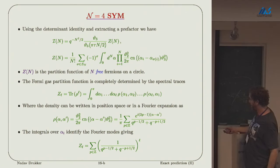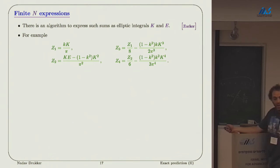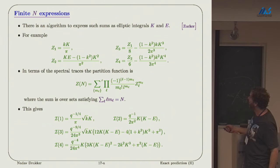These sums actually have been computed before. There's an algorithm to calculate them, and here I write the first four of them. They are given in terms of complete elliptic integrals K and E, and K is the elliptic modulus, which of course depend on Q in a particular way. Now if we want to calculate the partition function as a function of N, we need to sum over all permutations, or all conjugacy classes of permutations. This is the correct combinatorics for that.